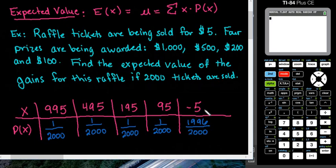I have already set up a probability distribution function down below. In here, if you're wondering where the $995 came from, it's because we purchased the tickets for $5.